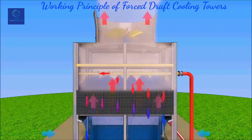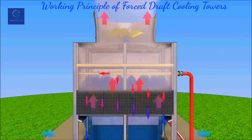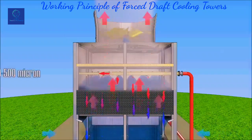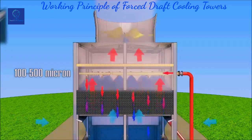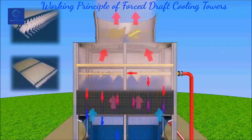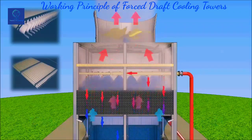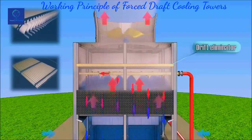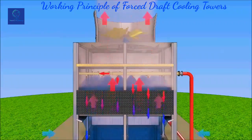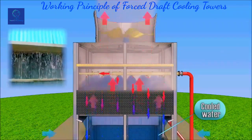Operating a cooling tower emits air saturated with water vapor and containing water droplets with a size of 100–500 microns. To prevent entrainment of water droplets, a drift eliminator is installed above the water distribution system. Cooling water moves down and flows into a catchment tank, from which a pump supplies it to the process technology.